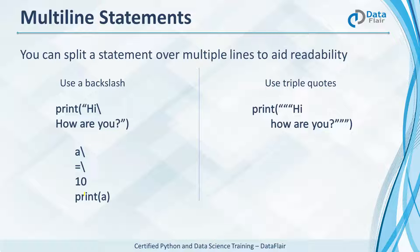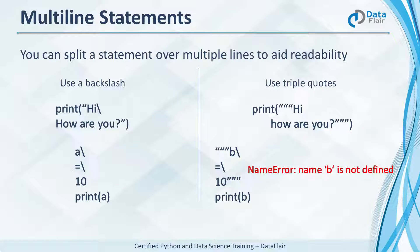You can also use triple quotes around a string. However, note that when we try to print the value of 'b' using triple quotes, it gives a name error — because triple quotes declare a string, not a variable assignment. Finally, we can also put multiple statements on one line using a semicolon. If you have experience with C++ or Java, you're familiar with the semicolon used to indicate the end of a statement. In Python it isn't mandatory, but we can use it to put multiple statements on one line.